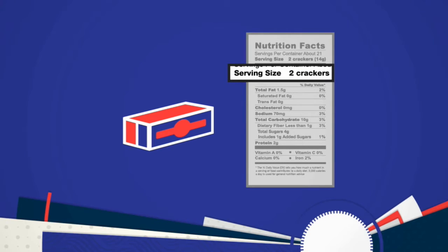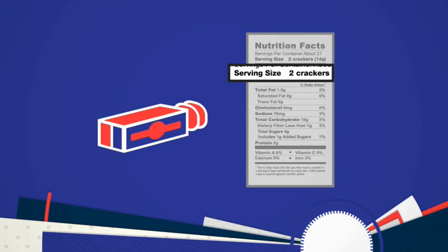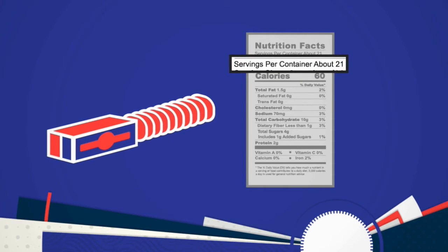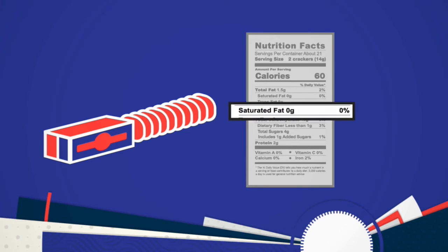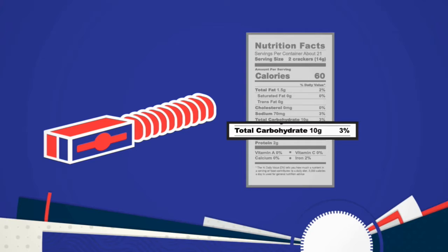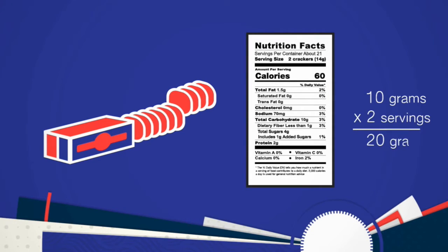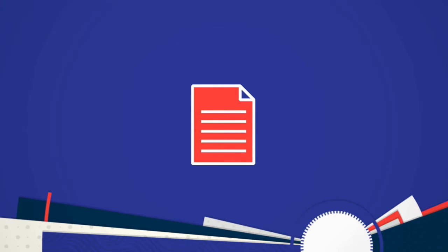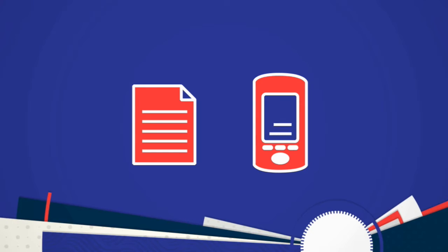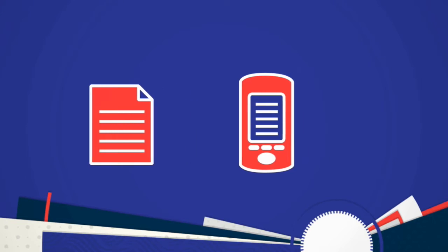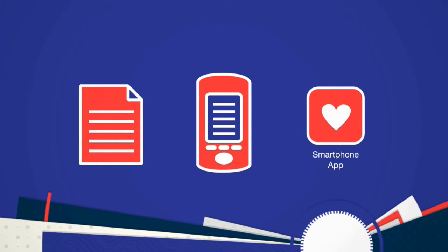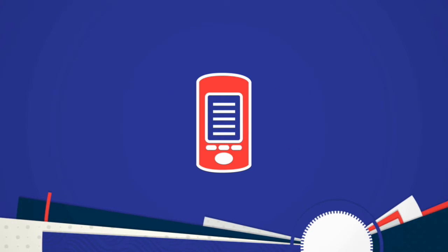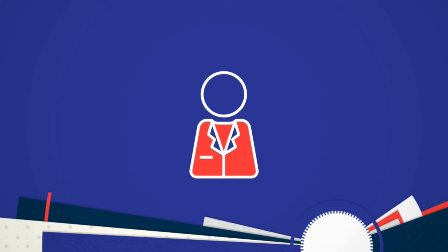Look for the serving size information at the top of the label. In this example, a serving is two crackers. But remember, a package may hold more than one serving — for example, this package contains 21 servings. Next, find the section called Total Carbohydrates. It tells you how many grams of carbs are in one serving. To find out how many total grams you are eating, multiply the number of grams in one serving by the number of servings you are eating. Each serving of two crackers contains 10 grams of carbs, so if you eat four crackers, you've eaten 20 grams of carbs. When you eat foods without labels, you can ask your dietician or healthcare provider for a food carb count list. Your Omnipod insulin management system also has a reference library of carb counts for many foods, and smartphone applications can be very helpful, especially when eating out. Before you begin using the Omnipod system, it is a good idea to meet with a registered dietician to review your meal planning and carb counting skills.